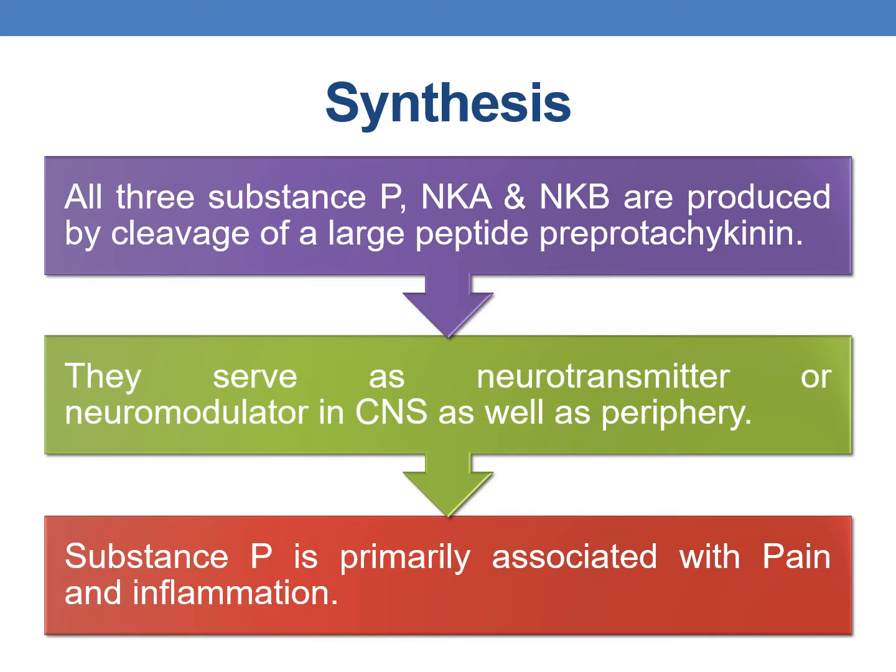Coming to the synthesis, all three tachykinins — Substance P, Neurokinin A, and Neurokinin B — are produced by cleavage of a large peptide pre-protachykinin, and they serve as neurotransmitters or neuromodulators in the CNS as well as the periphery.